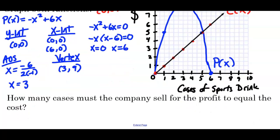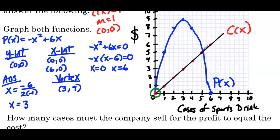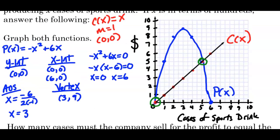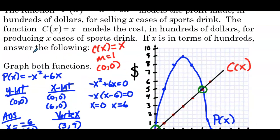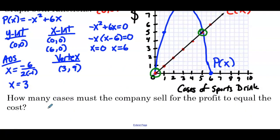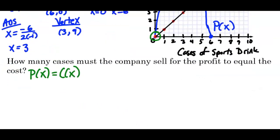Okay, so there is the profit and the cost graphed together. Now the next question, how many cases must the company sell for the profit to equal the cost? Well, the two points of intersection are here and here. But a good reminder, going back through the problem, is x cases of sports drink and x is in terms of hundreds. Okay, so if x equals 1 for a point of intersection, that really means 100 cases.